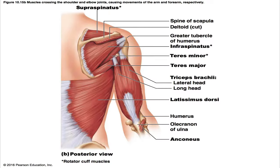The anconeus is a short triangular muscle partially blended with the distal end of the triceps on the posterior aspect of the humerus. Its origin is the lateral epicondyle of the humerus, and its insertion is the lateral aspect of the olecranon process of the ulna. Its primary action is to control ulnar abduction during forearm pronation, and it is also a synergist of the triceps brachii during elbow extension. It is innervated by the radial nerve.